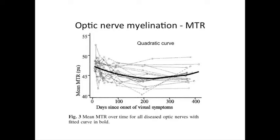Another MR technique we've been using provides a value called MTR, or magnetization transfer ratio. We think this gives us an indication of how many nerve fibers are lost and also the degree of myelination within the nerve. In a study we did a few years ago, we found that early on there's a reduction in MTR values, but later on towards the end of the year there seems to be a slow increase, which possibly suggests some form of remyelination.